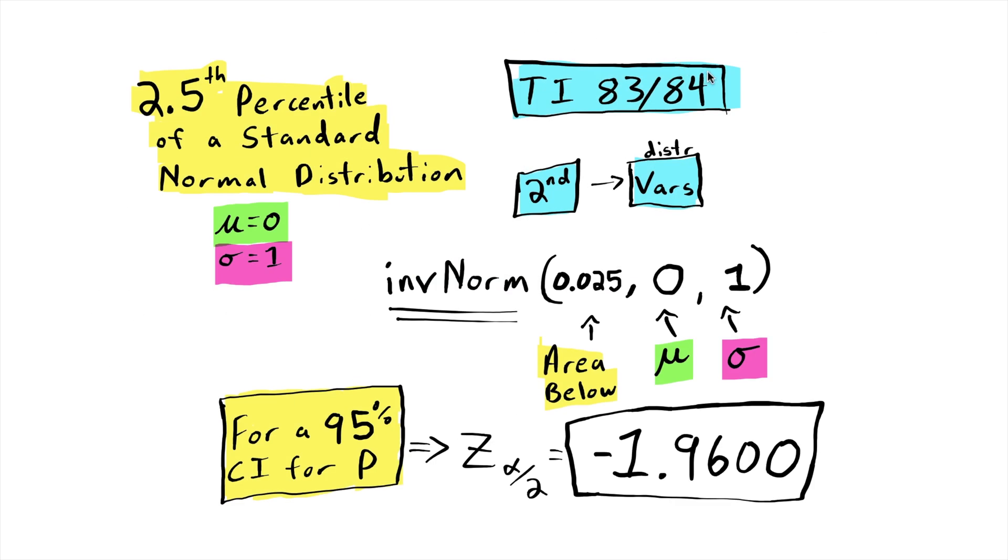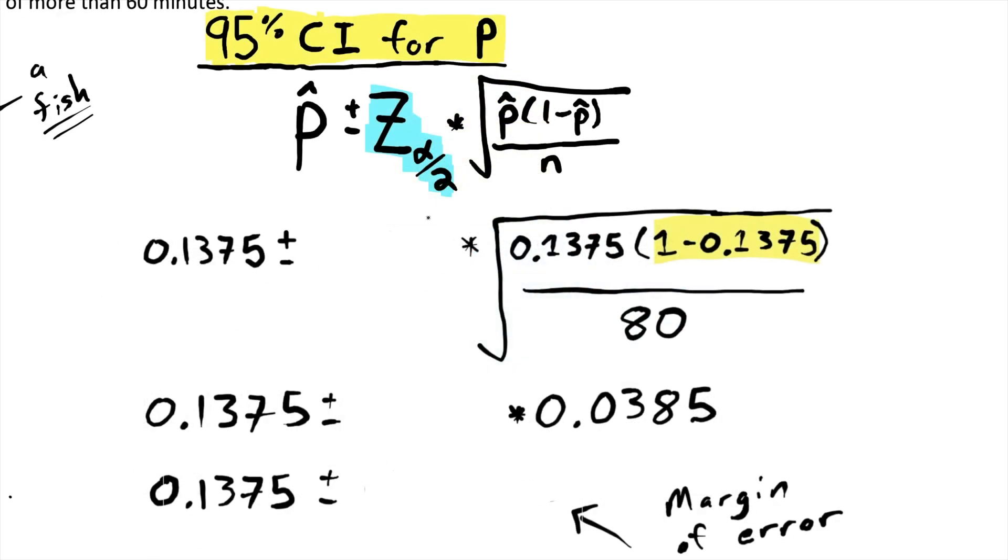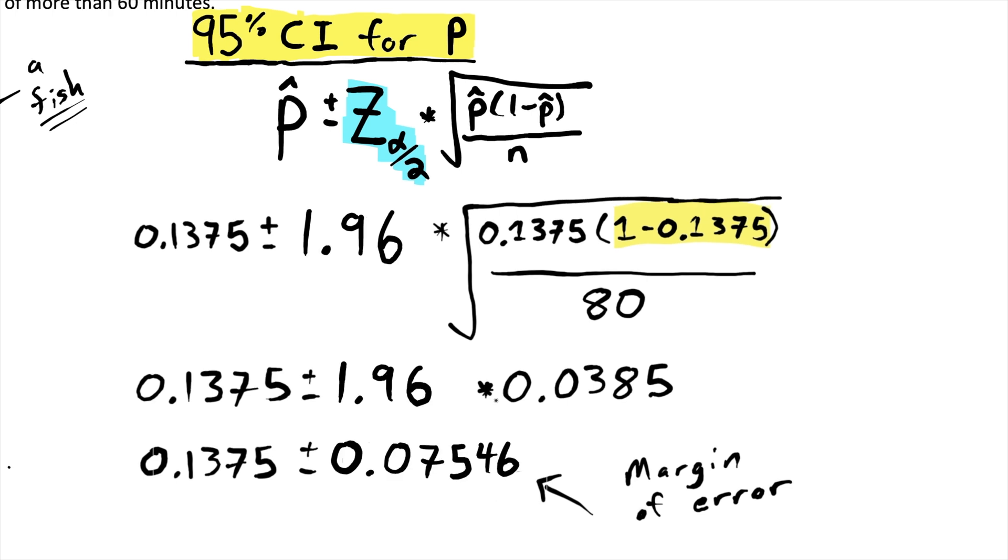With a TI-83 or 84 graphing calculator, the 2.5% percentile of a standard normal distribution is negative 1.96. And just as before, that negative 1.96 is the lower value, and I'd use the positive corresponding value 1.96. So going back to our formula, we have our z-score for a 95% confidence interval. Nothing in this square root changed, so we can still use the value we found earlier. Which means that when I multiply, I get our new margin of error, 0.07546.